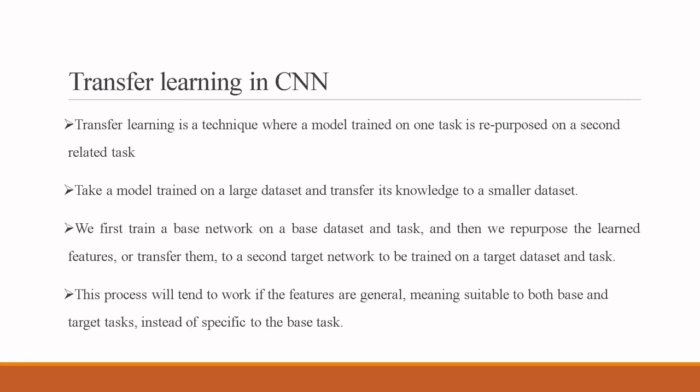Transfer learning is a technique where a model trained on one task is repurposed for a second related task. A model trained on a large dataset transfers its knowledge to a smaller dataset. A base network is first trained on a base dataset and task, and the learned features are transferred to a second target network to be trained on a target dataset. This works when the features are general — suitable to both base and target tasks — and the tasks are similar.